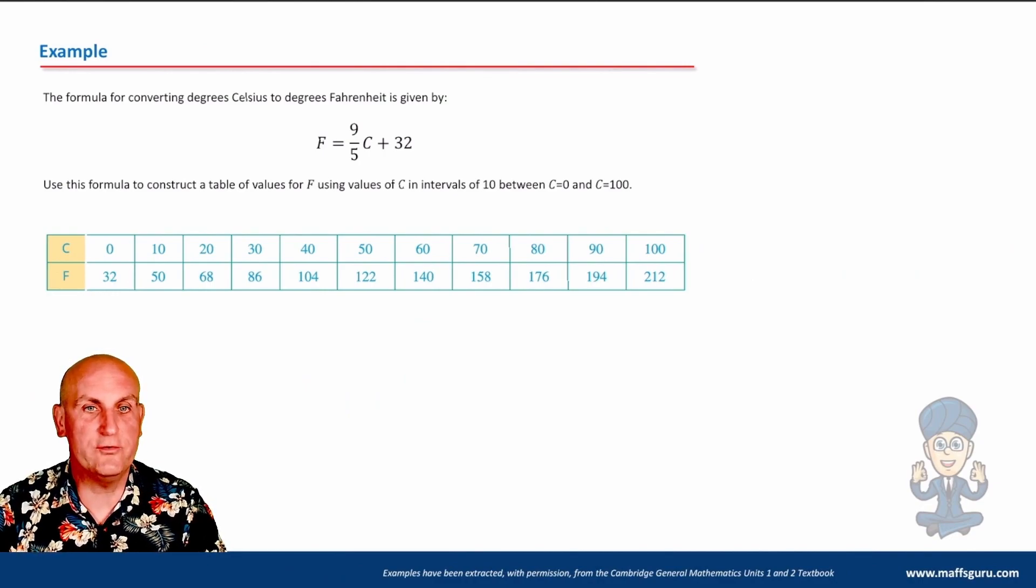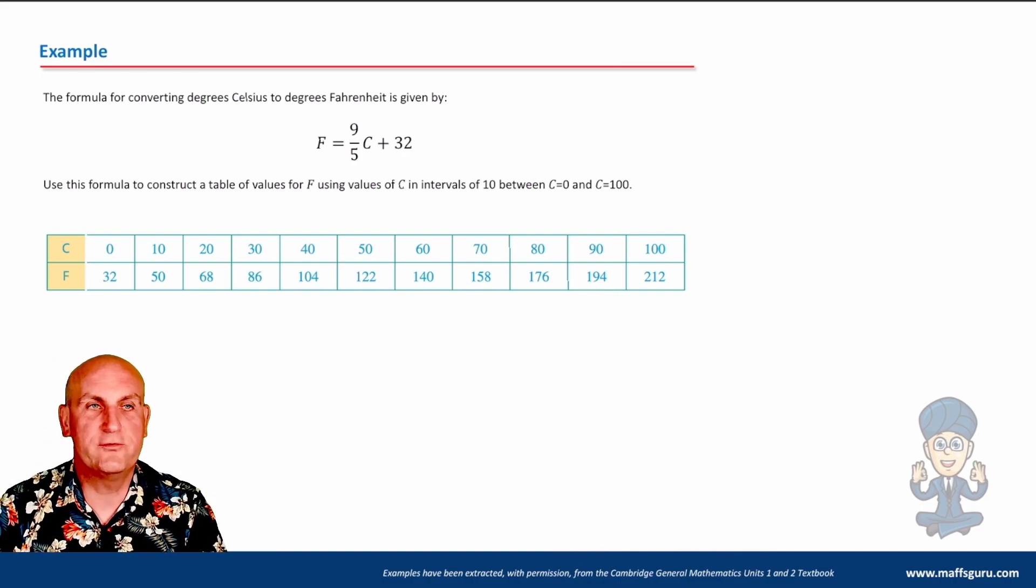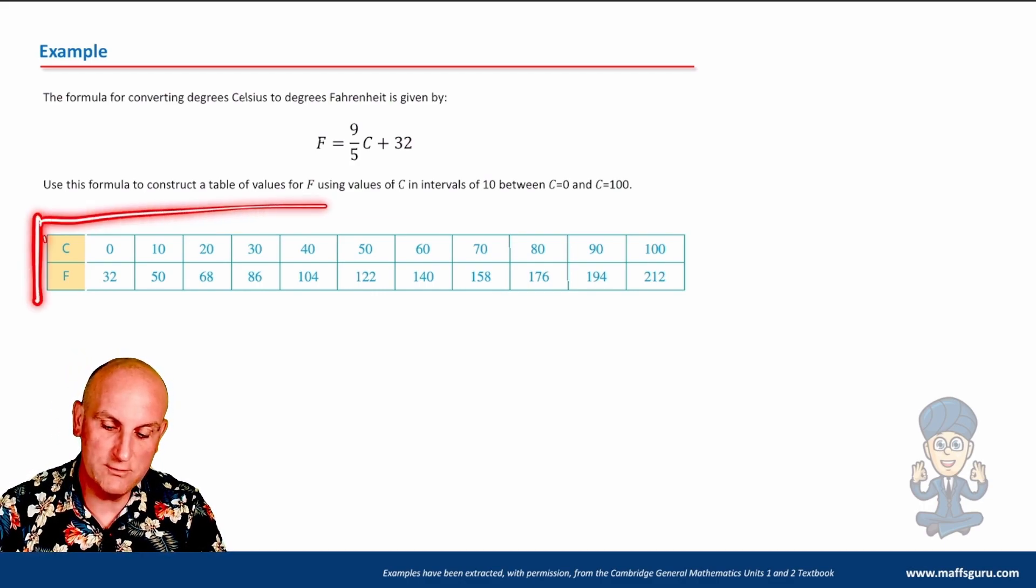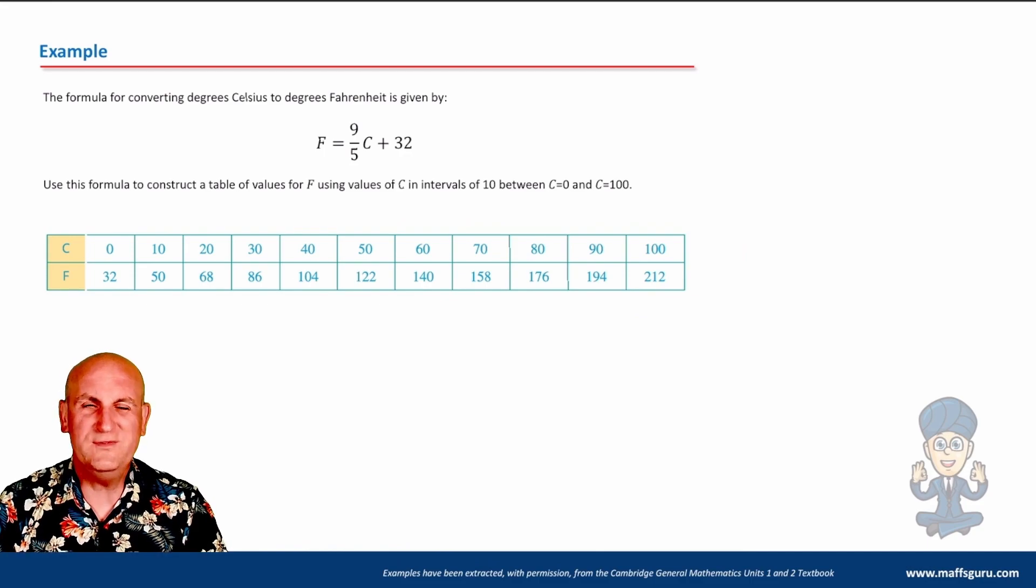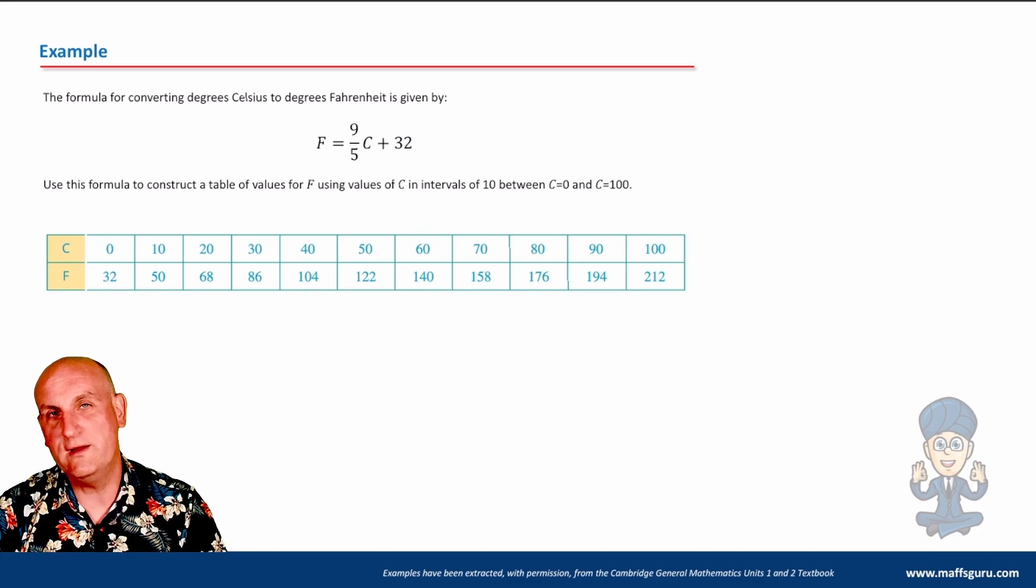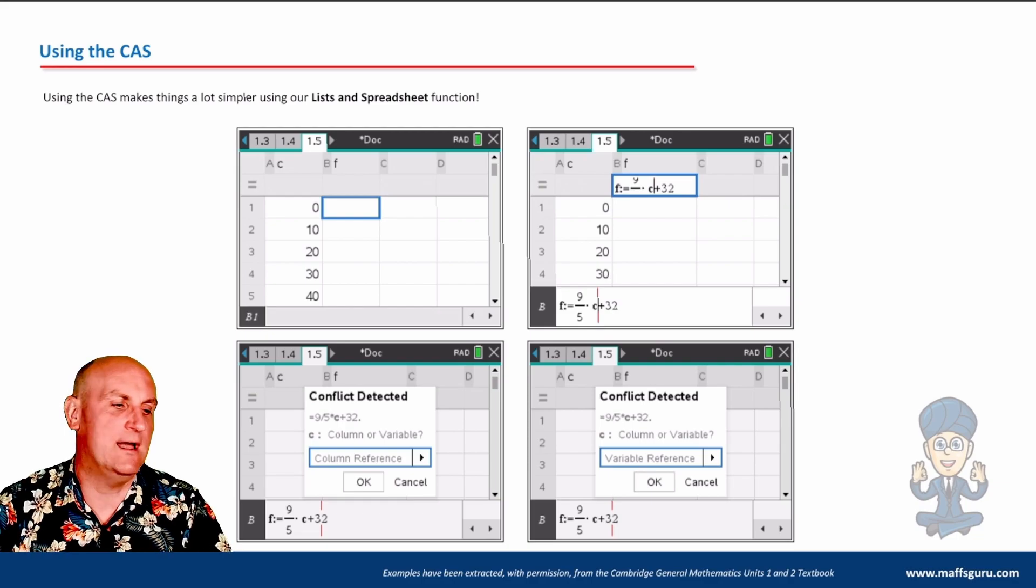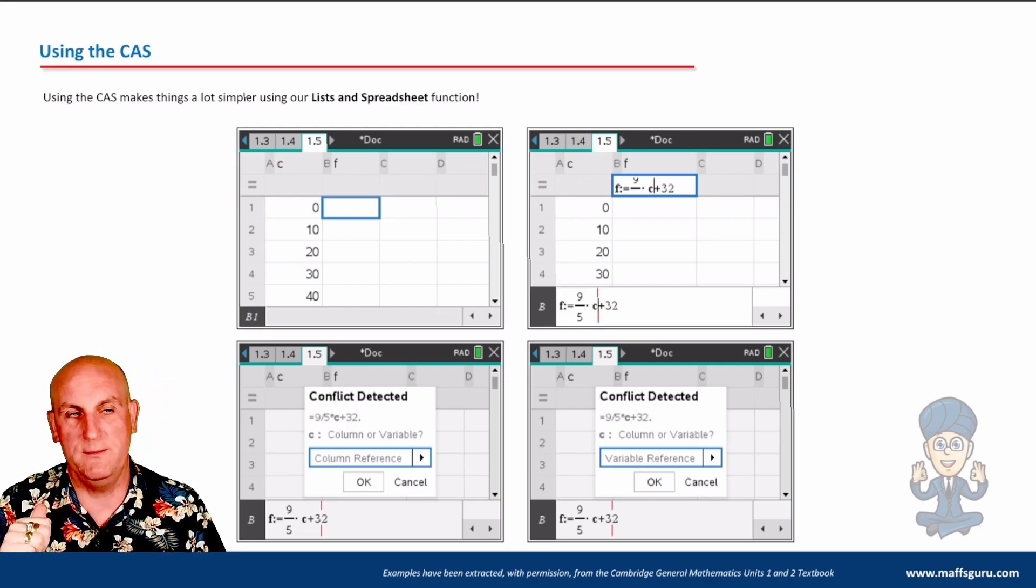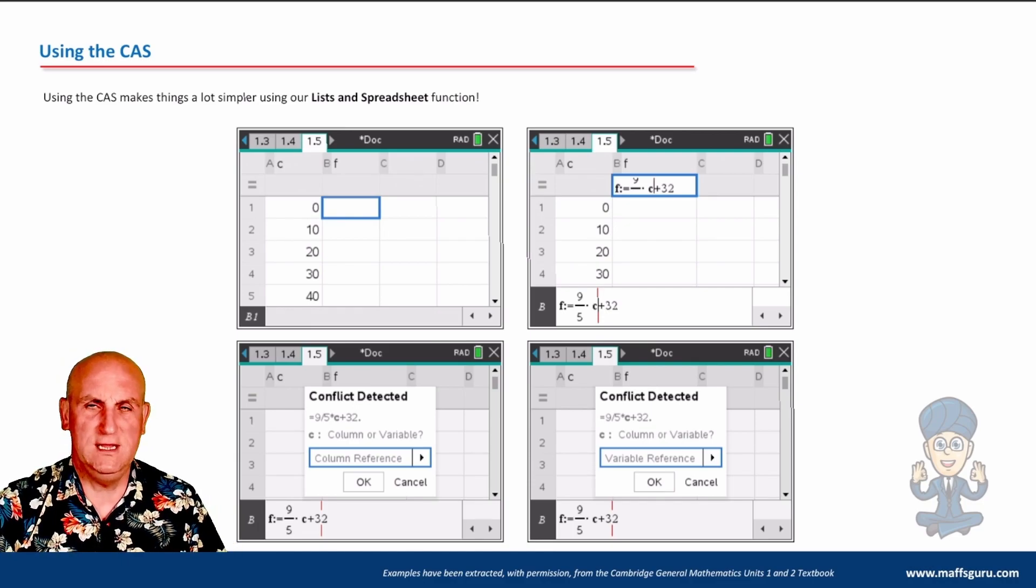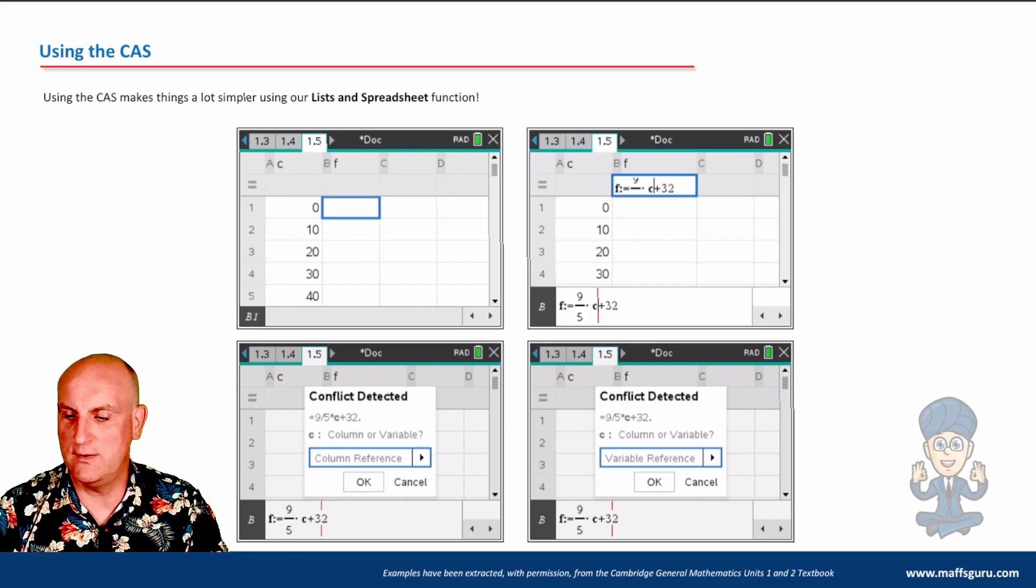Now again, I could replicate this all the way through the table. But ultimately, that's a way of turning lots of values by using a table or working out lots of values using a table. If we were to take that out of, thank you very much to Cambridge for allowing me to use your examples. Use this formula to construct the table of values for F using values of C. That's my table of results. Now obviously this is quite challenging. That's a lot of work to keep typing that formula in. Wouldn't it be great if there was an easier way to do it? We can use our CAS.